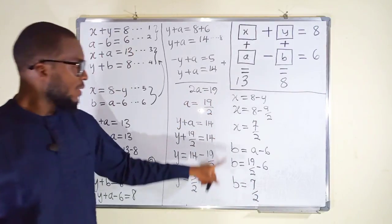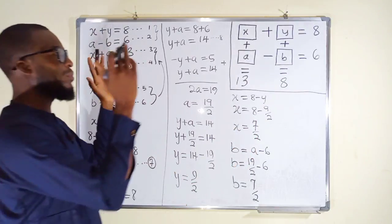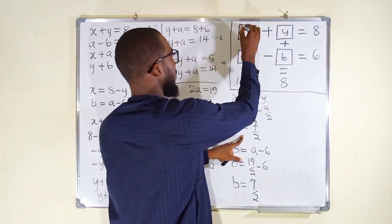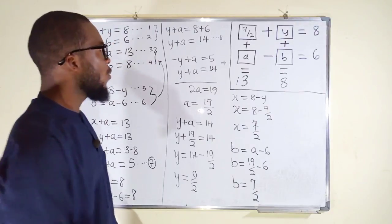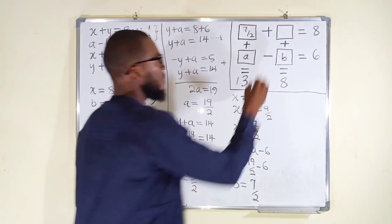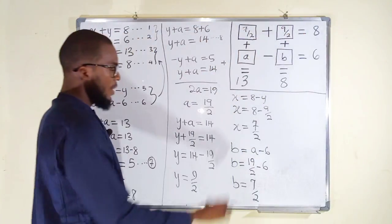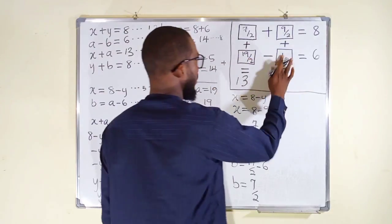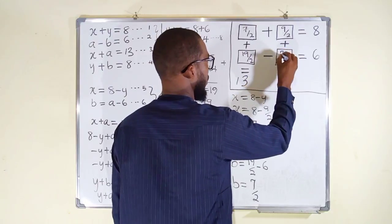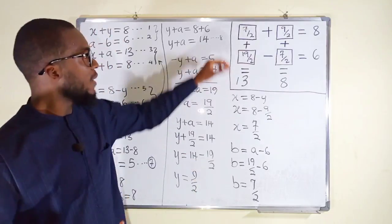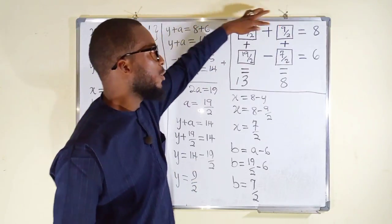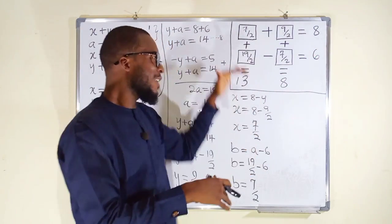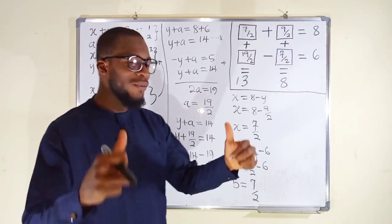So our final values are: a equals 19 over 2, b equals 7 over 2, x equals 7 over 2, and y equals 9 over 2. We can now replace them back into their respective boxes. To confirm, 7 over 2 plus 9 over 2 is 16 over 2, which equals 8 — the statement is true. You can verify all the other boxes as well. Thank you for watching, and do have a nice day.